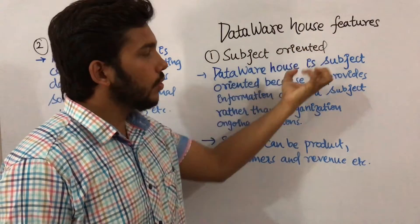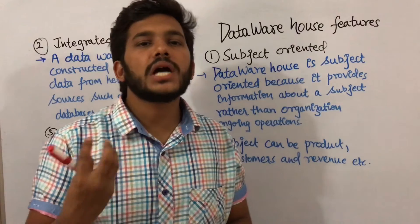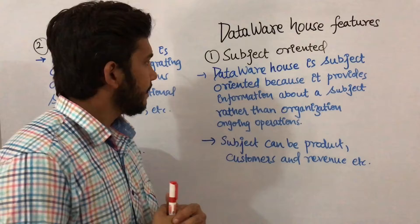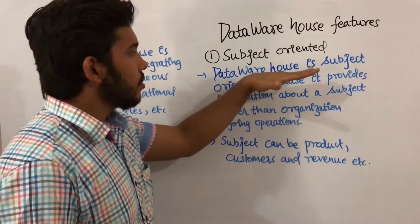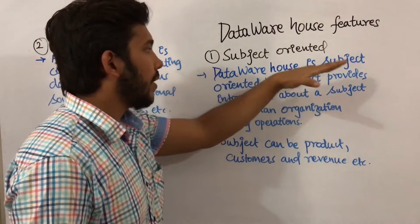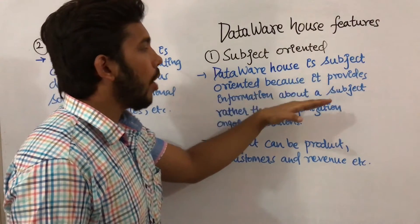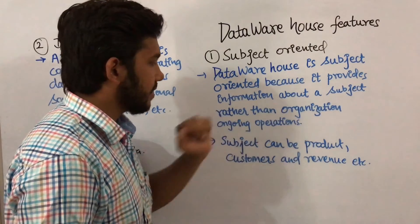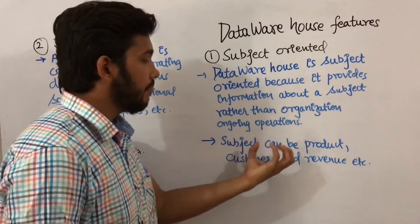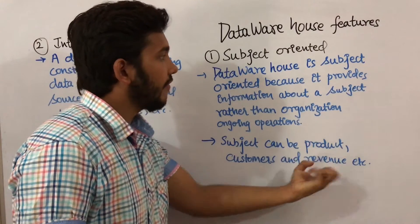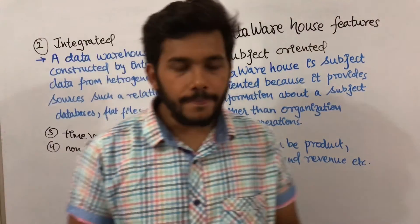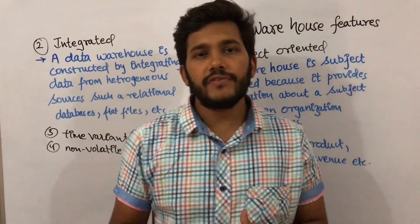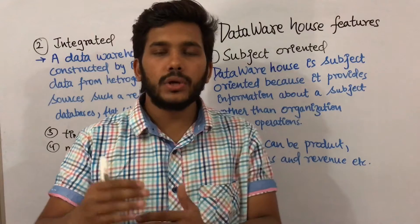The first feature is subject oriented. A data warehouse is subject oriented because it provides information about a subject rather than organizational ongoing operations. These subjects can be product, customers, revenue, etc. In a data warehouse, we can store data particular to one subject.